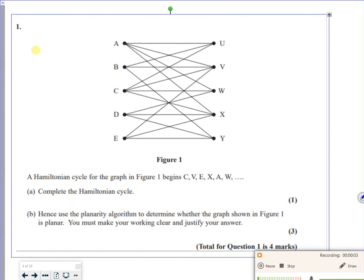Hi everyone, so this is a question from planarity, and it's from the 2021 paper. It says we've got a Hamiltonian cycle going from C to V to E to X to A to W. So let's have a look.